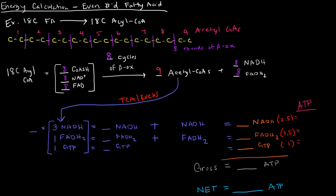That's for 1 acetyl-CoA. We have 9, so we're going to multiply these values by 9. And when we do that, we get 27 NADH's, 9 FADH2's, and 9 GTP's.